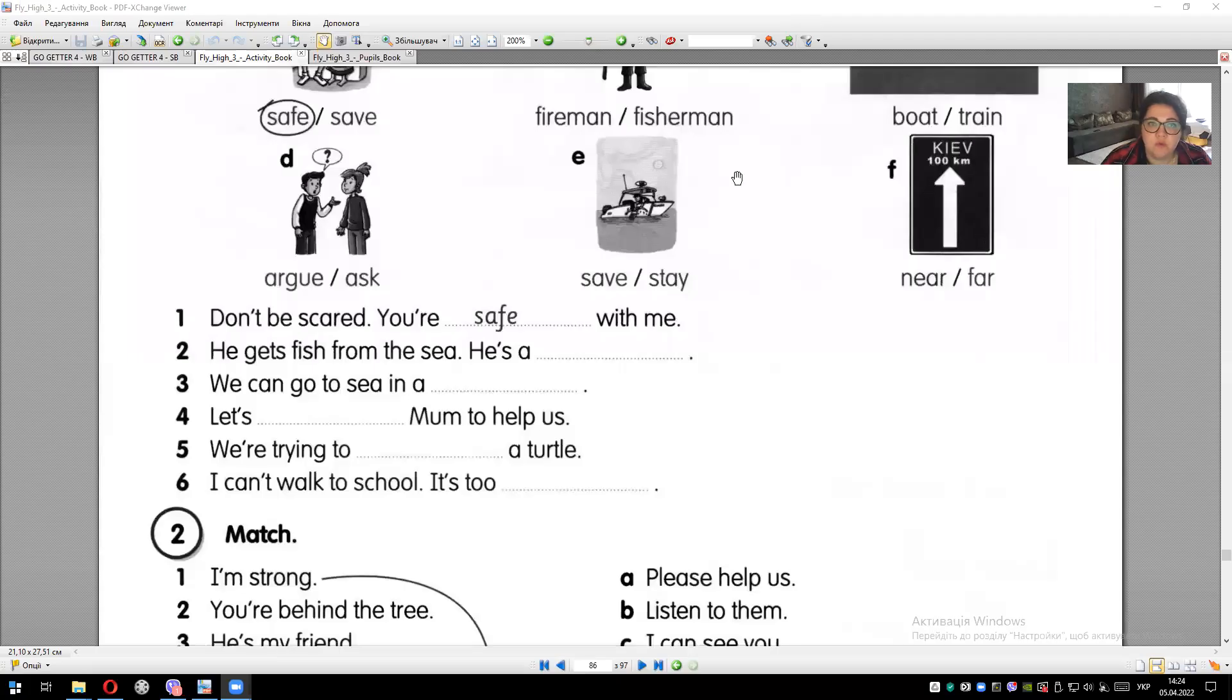Let's try to do the exercise and look carefully at the continuation. We'll do it together now. So, we complete the sentences with the given words. Don't be scared. You are safe with me. Don't be scared, you're safe with me.